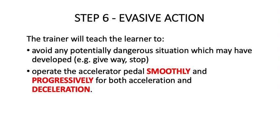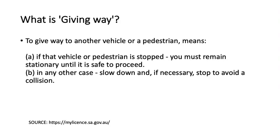Step six: evasive action. The trainer will teach the learner to avoid any potentially dangerous situation which may have developed — for example, give way or stop. Operate the accelerator pedal smoothly and progressively for both acceleration and deceleration. To give way to another vehicle or pedestrian means: if that vehicle or pedestrian has stopped, you must remain stationary until it is safe to proceed; in any other case, slow down and, if necessary, stop to avoid a collision.